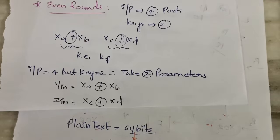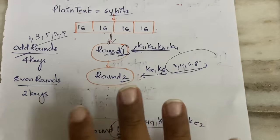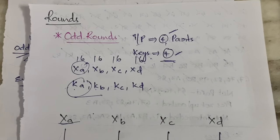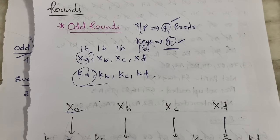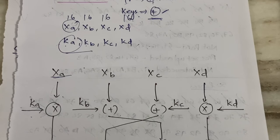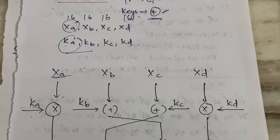This is all about the IDEA algorithm. In an exam, you should first draw the overall diagram showing 17 rounds, explain that odd rounds use four keys and even rounds use two keys, and then explain the internal operations for both odd and even rounds. I hope this video is useful — please hit the like button, share with your friends, and let me know in the comments if you want more videos. Thanks for watching!